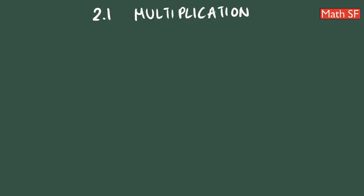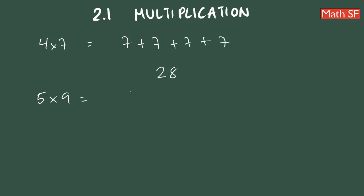Multiplication means we add a number a certain number of times. For example, 4 times 7 means we add 7 plus 7 plus 7 plus 7, four times. The outcome will be 28.